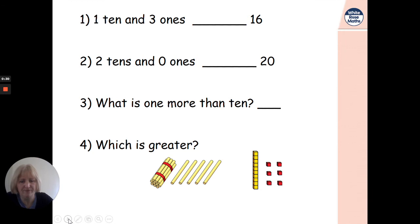Okay, let's have a little look and a quick recap first. One ten and three ones, 13. 16. 13 is less than 16. Two tens and no ones, 20. Two tens and no ones is equal to 20. What is one more than 10? 11, good. And which is greater? Looking carefully at the pictures. A bundle of 10, 11, 12, 13, 14, 15. A bundle of 10, a tower of 10, and two, four, six. Five ones over here, but six ones over here. Oh, that one, that's 16, isn't it?